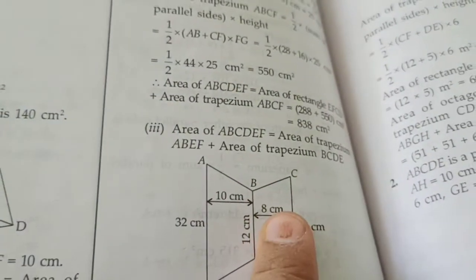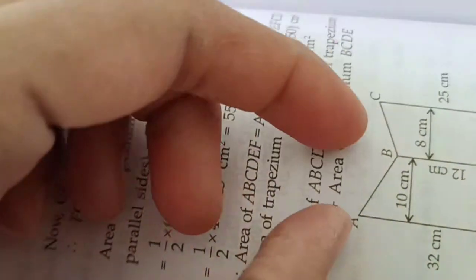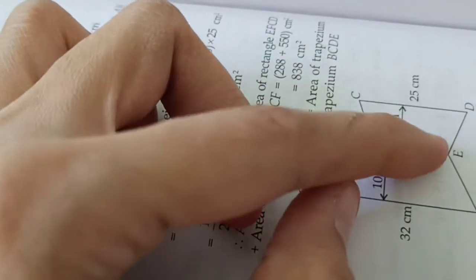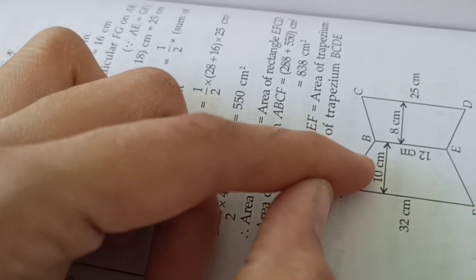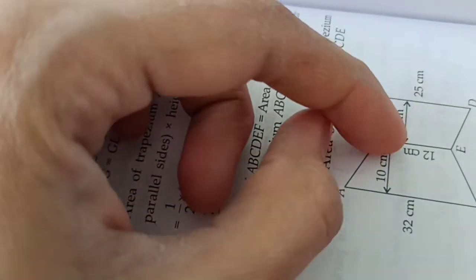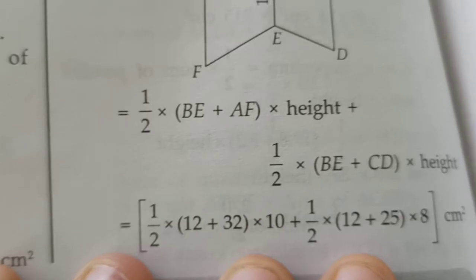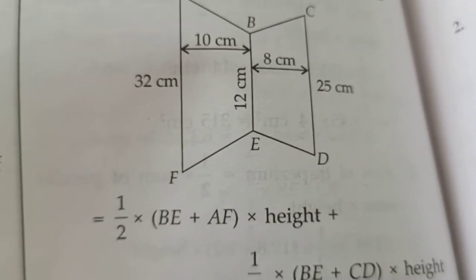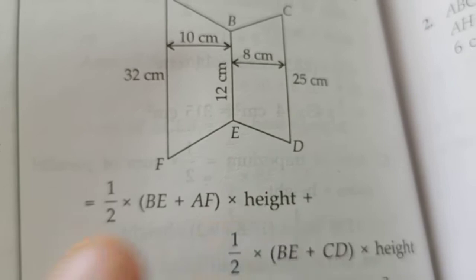Now in third figure there are two trapeziums. It will look like this. It is trapezium and it is trapezium. What is the formula? Sum of parallel sides that is 12 plus 32 divided by 2 multiplied by 10. This is the first one. The second one will be height multiplied by 25 plus 12 divided by 2. This is how we are getting 12 plus 32 because sum of two parallel sides multiplied by height plus half into sum of two parallel sides multiplied by height.